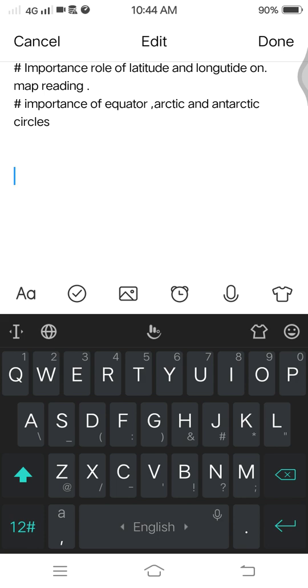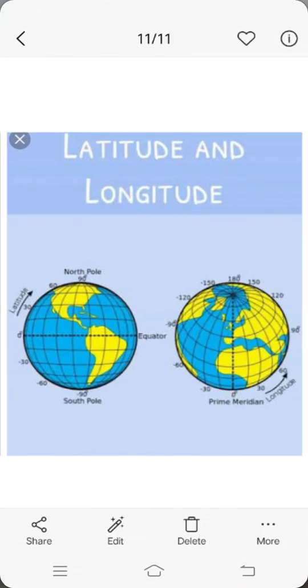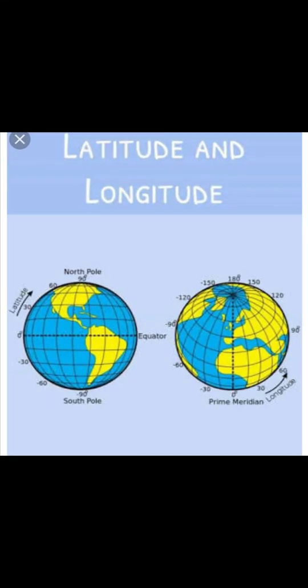First, let's understand latitude and longitude. For example, if you have a house and you want to give its location to any person, your house has a number — like 200, 300, 400, or 29 or 50 — and you give that number to find the location. In the same way, longitude and latitude show your location on a map.